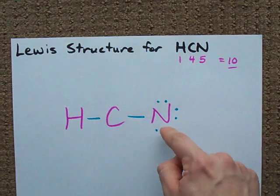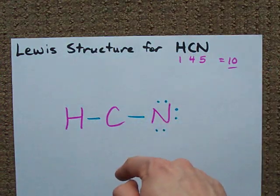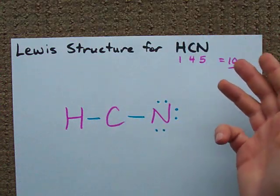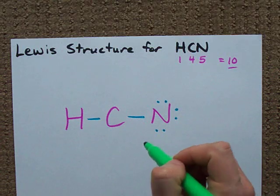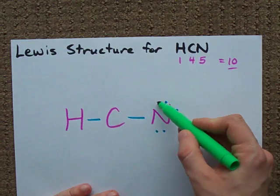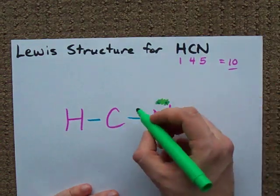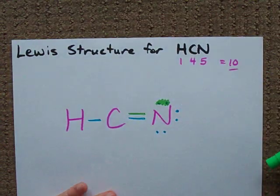Finally, move electrons from your outer atoms to your central atoms until they also have a full octet. Carbon here needs electrons and it currently only has one, two, three, four around it. So, get rid of two electrons from nitrogen, make it a double bond.